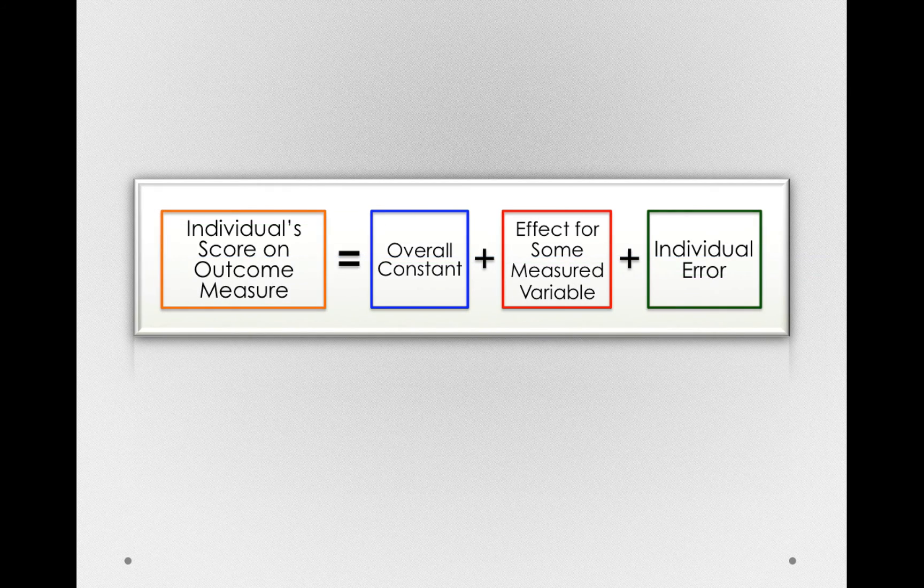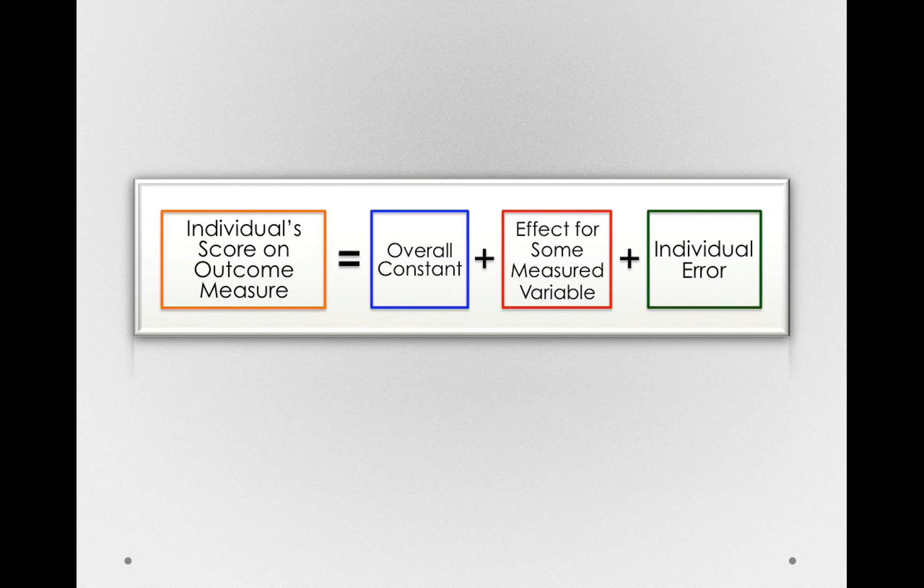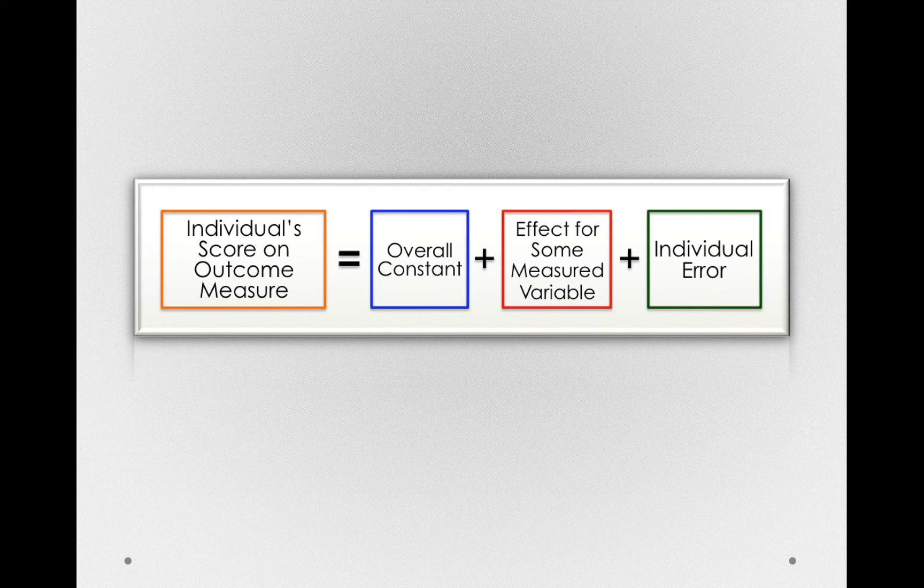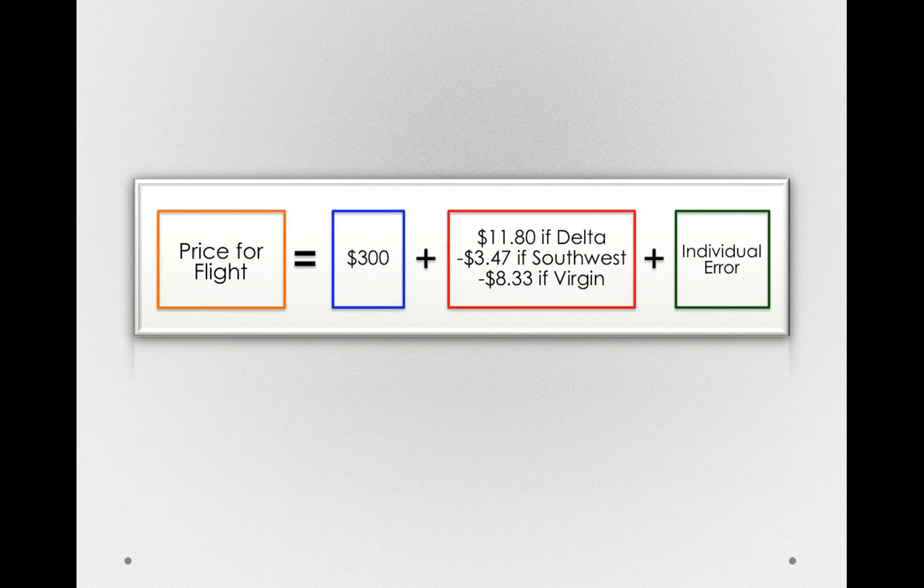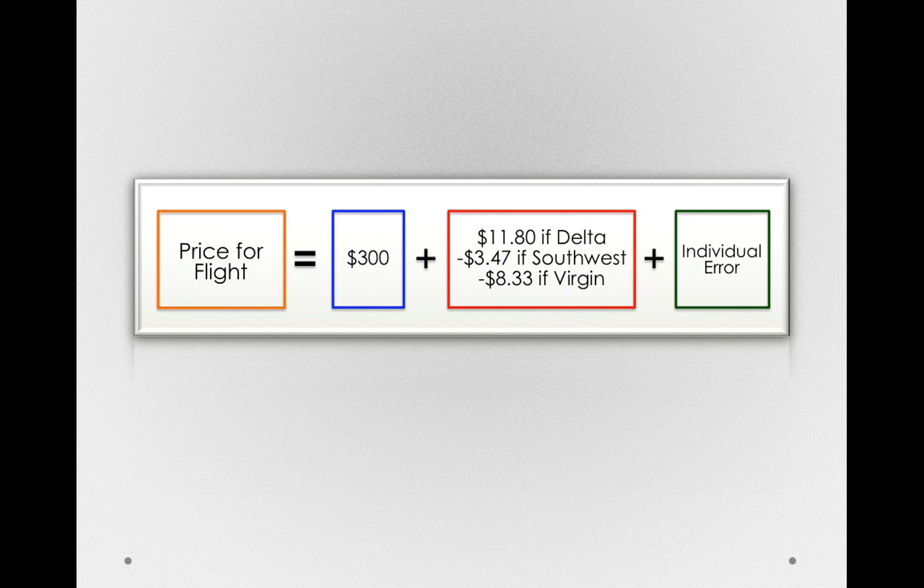Again, we'll have our basic mathematical model template: an individual's score on that outcome measure (how much they paid) equal to some overall constant, plus the effect of some measured variable, plus individual error. In this case, the price for flight is equal to that overall average price, plus the cost offsets for each of the different airlines.